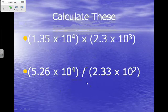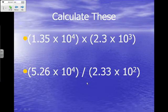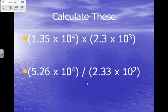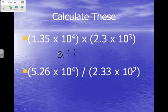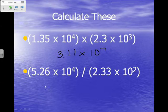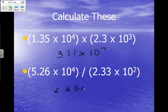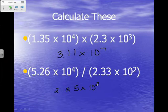Now it's time for you to practice on your own. You have two problems to practice. Go ahead and work them out in your notes, copy the problems down, and pause the tape until you get them calculated. Resume the tape to check your answers. Practice problem number 1 is 3.11 times 10 to the seventh power. Practice problem number 2's answer should be 2.25 times 10 to the second power. If you have questions, jot them down on the left-hand side of your notes to ask in class tomorrow.